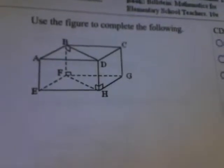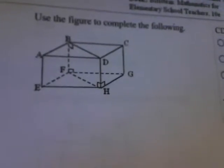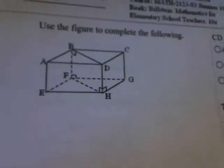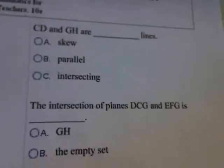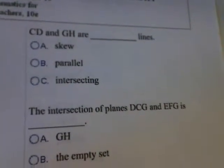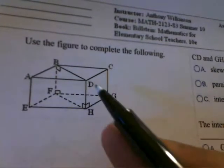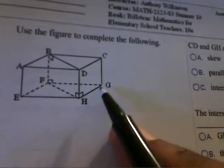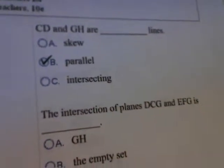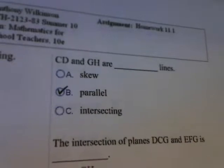We'll look at some of the homework problems in section 11-1. Using the figure shown, the first problem asks what type of lines are CD and GH. Here's CD up here and here's GH down here. CD and GH are in the same plane but they are not intersecting each other, so CD and GH are considered to be parallel lines. We'll select B for parallel lines.